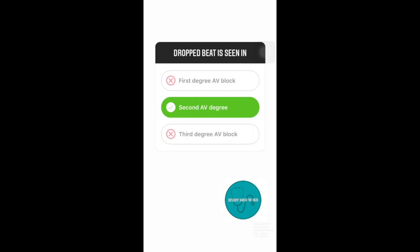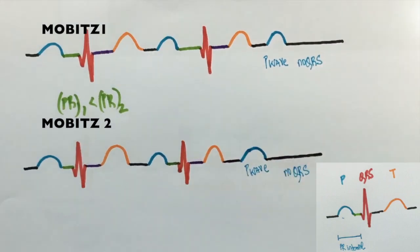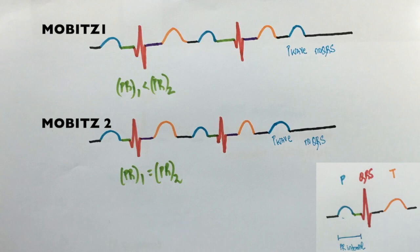Since both Mobitz-1 and Mobitz-2 have a drop beat, what differentiates one from another is that in Mobitz-2, the PR intervals are equal in all the heartbeats. Mobitz-2 is a more dangerous type and requires a pacemaker.